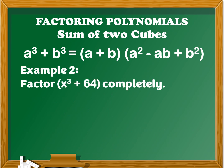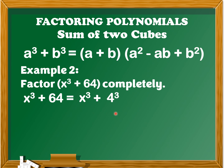Let's have example number 2. We will factor x cubed plus 64 completely. First, we write x cubed plus 64 in the form of a cubed plus b cubed. That is x cubed plus 4 cubed, since 64 is equal to 4 cubed. So we have x cubed plus 64 equals x cubed plus 4 cubed. Next, we determine the value of a and b: a is x and b is 4.